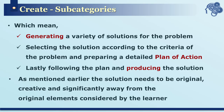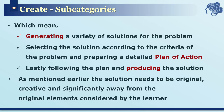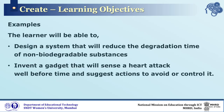Generating occurs when the learner creates many different solutions for a given problem, then selects the best fit. Planning involves detailed planning of the process to follow. Finally, the learner executes all the steps according to the plan and produces the product. The solution needs to be original, creative, and significantly different from the original elements. Examples of learning objectives for create are: suggest alternative solutions to a given problem; write a comedy play script; generate a detailed plan for a medical health facility; design a system to reduce degradation time of a non-biodegradable substance; invent a gadget that will sense a heart attack before it occurs and suggest actions to avoid or control it.